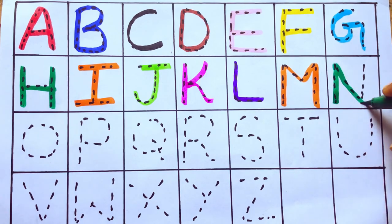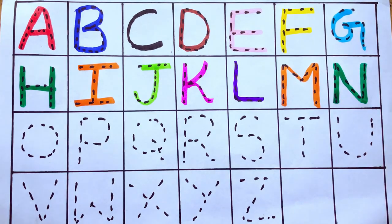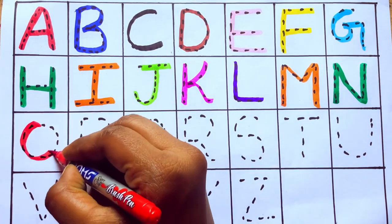Green color, N for nest. Red color, O for orange.